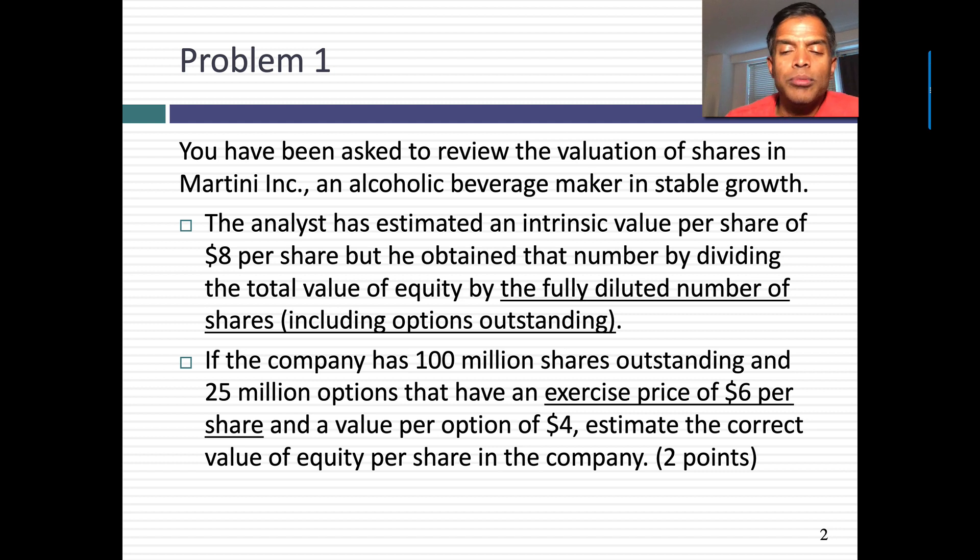You're told that the company has 100 million shares outstanding, 25 million options. And you're also told that the exercise price, in other words, if you had to exercise these options, this is what you'd have to pay the company, would be $6 per share. And the value per option is $4. So when you value an option, remember you use an option pricing model, you put in a time premium, very different perspective on options. It asks you to estimate the correct value of equity per share.